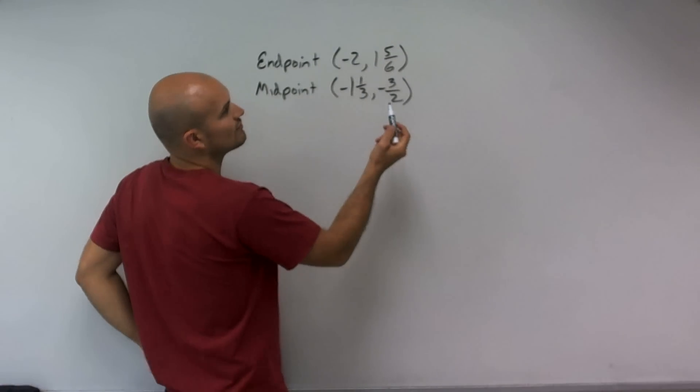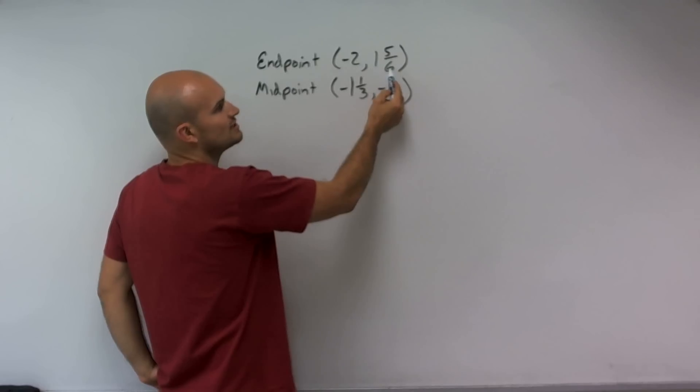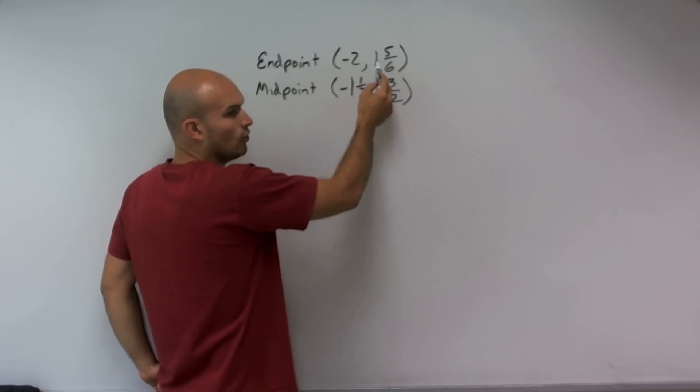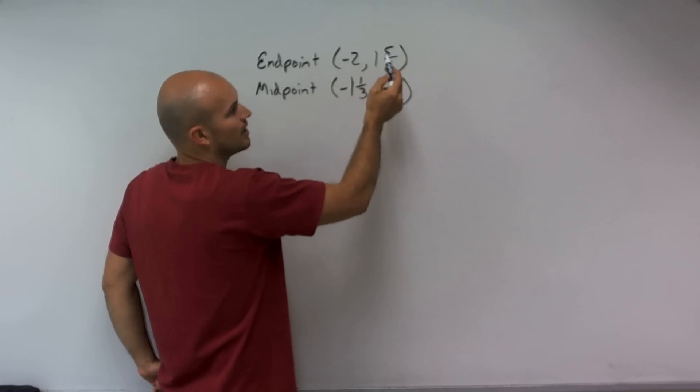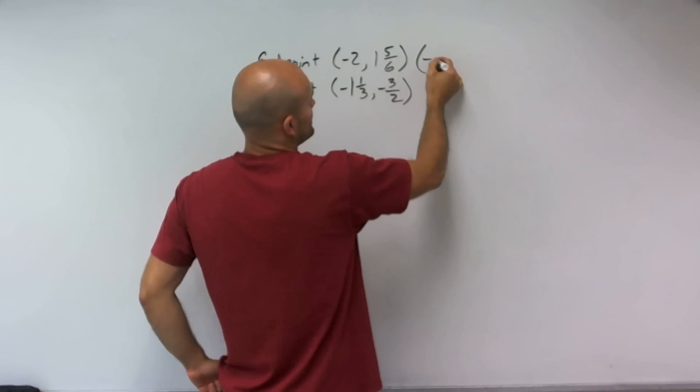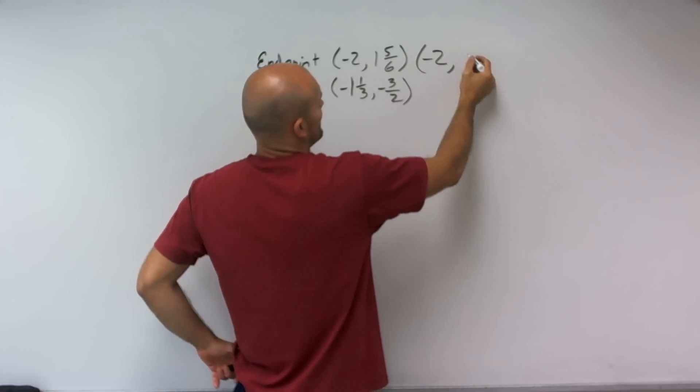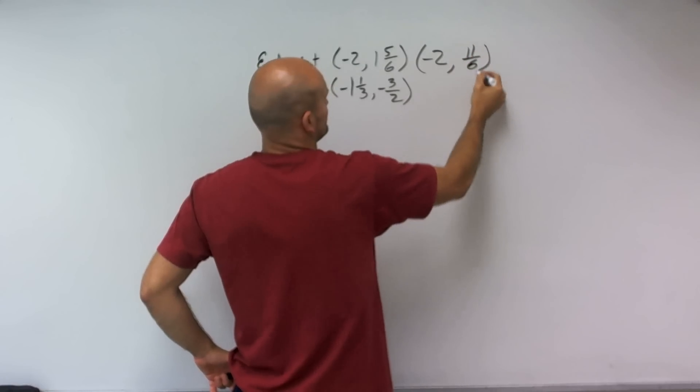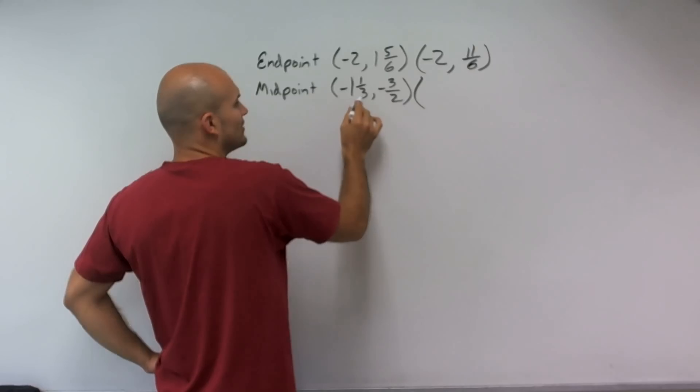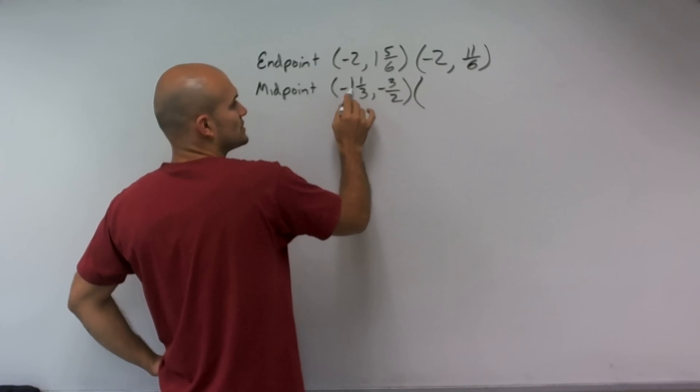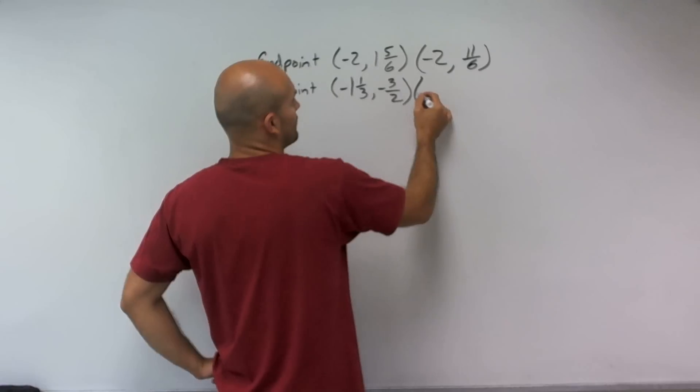To convert to improper fractions, you take your denominator, multiply it by your whole number, and then add the numerator. So this point I can rewrite as negative 2 comma 6 times 1 is 6, plus 5 is 11/6. This point I can write as negative 3 times 1, which is 3, plus 1 is 4/3.